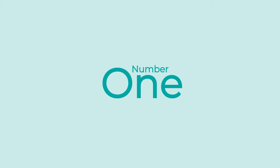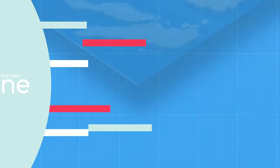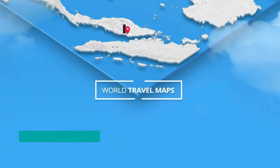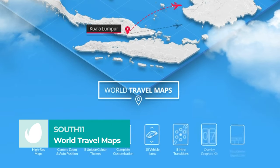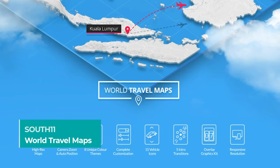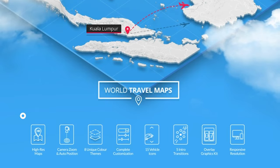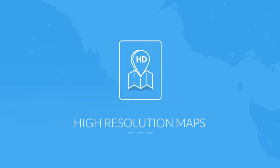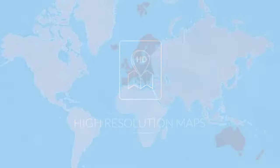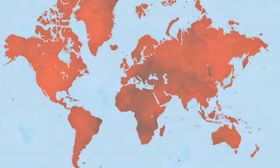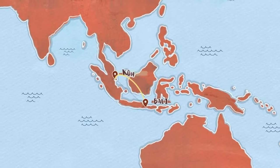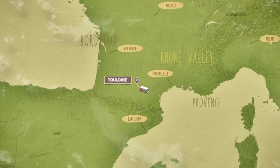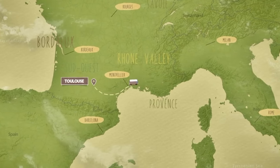Number 1. World Travel Map by South Eleven. Due to its high customization — color, icons, text, 3D vehicles, and perspective — the number one spot on this list will help you create a map animation in After Effects that fits the needs and design of any project. It's like the Swiss Army knife of map animations.